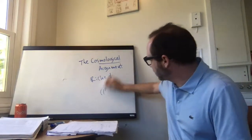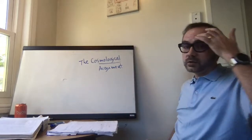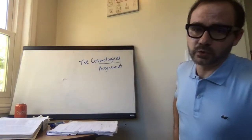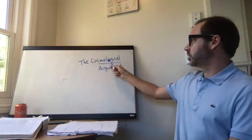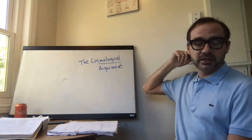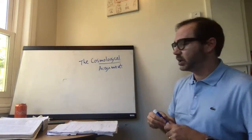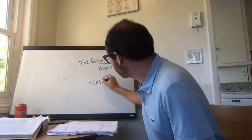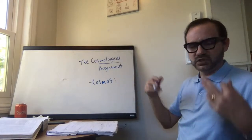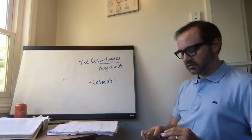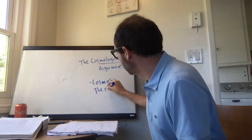Setting aside the biographical sketch of the author, we want to know what does the cosmological argument mean. Let's think about the words themselves used to title the argument. The word 'cosmological' has a root word in it — that is the word cosmos. So it's the cosmological argument based off the root cosmo, meaning cosmos. The cosmos is the entire universe — not just a part of it like planet Earth, the solar system, or even the Milky Way galaxy, but the entire extension of all space and time.